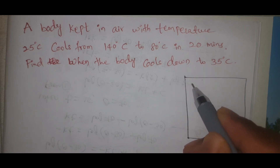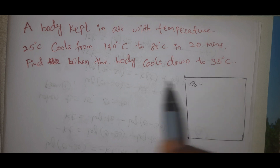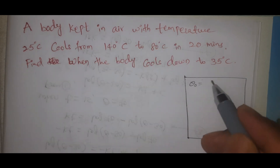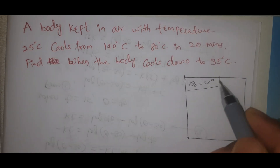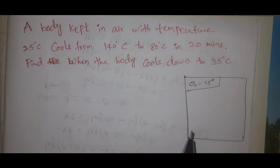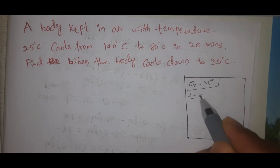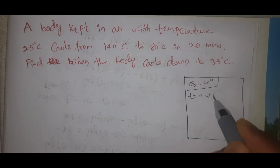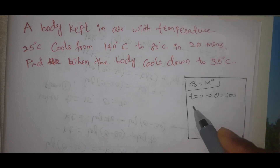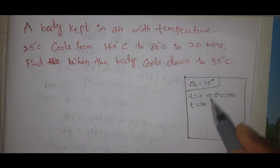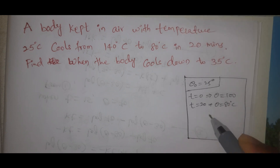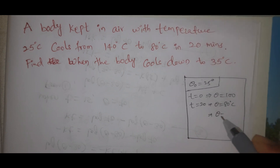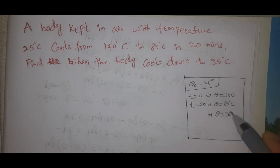The surrounding air temperature, theta naught, equals 25 degrees centigrade. The initial value: at t equals 0, theta equals 140 degrees. Next, at t equals 20 minutes, theta equals 80 degrees centigrade. We need to find t when theta equals 35 degrees centigrade.